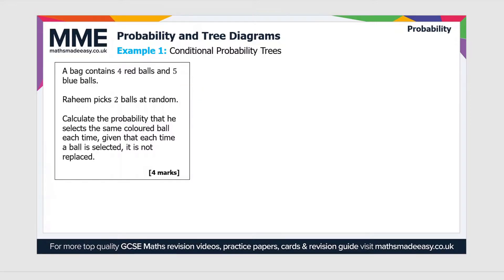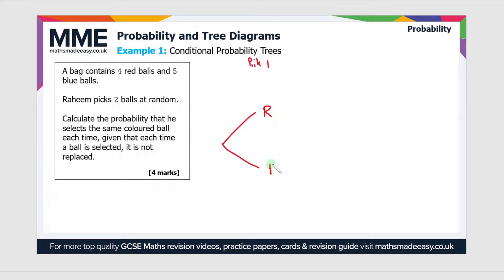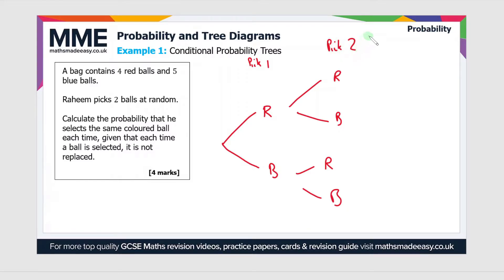This is quite similar to the red and blue sweets example that we've seen in the past. So let's start constructing the tree diagram. The first event will be the first pick — let's call it pick one. It can either be red or blue, and then for the second pick it can either be red or blue again. So those are our possible outcomes — let's label that pick two.